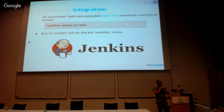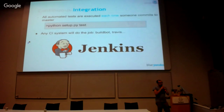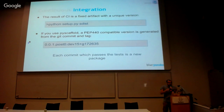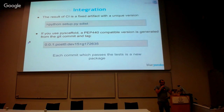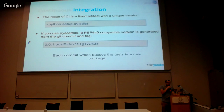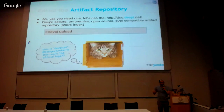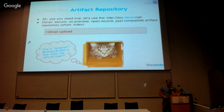We need continuous integration, so we use Jenkins for this, but you can use whatever you want. It's just normal Python setup test and it runs all your tests. After all tests pass, there's a step where we build our package. This should be a fixed package — really a binary package in the end — which has a unique version. So each commit in the end has such a binary, unique version.